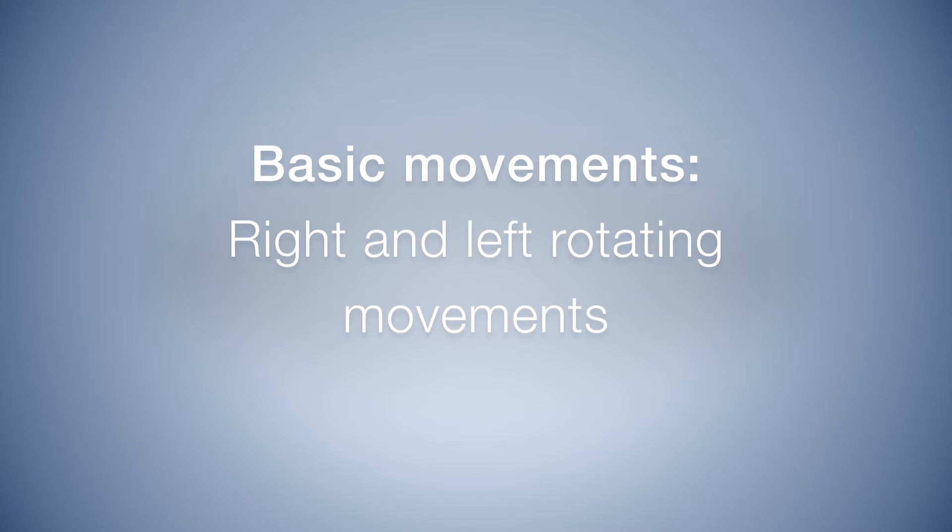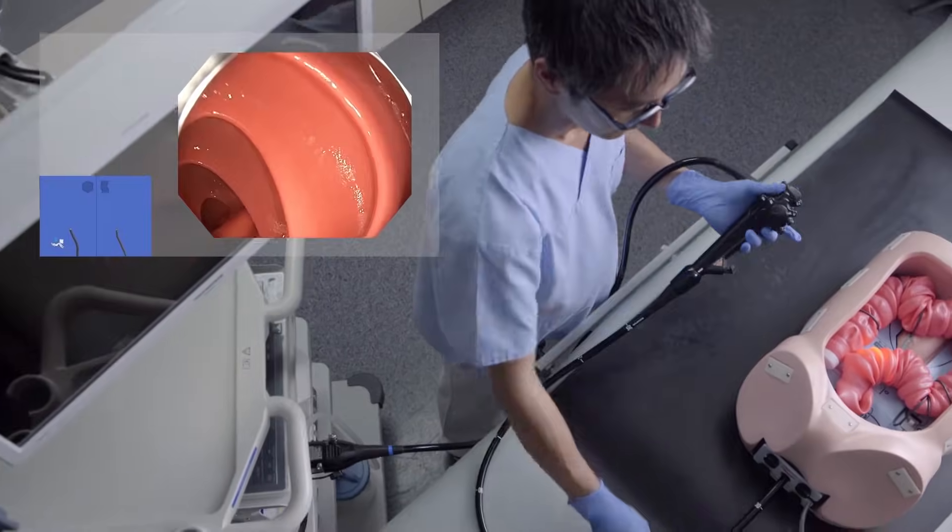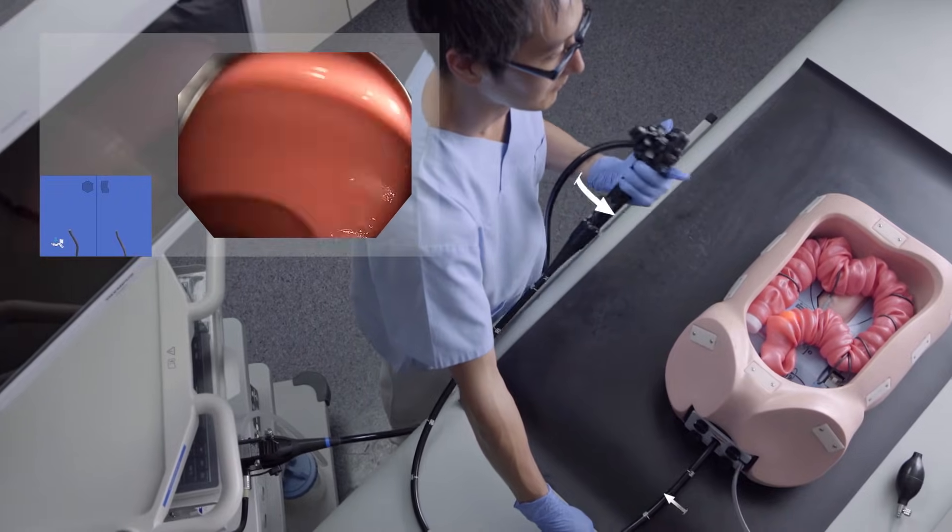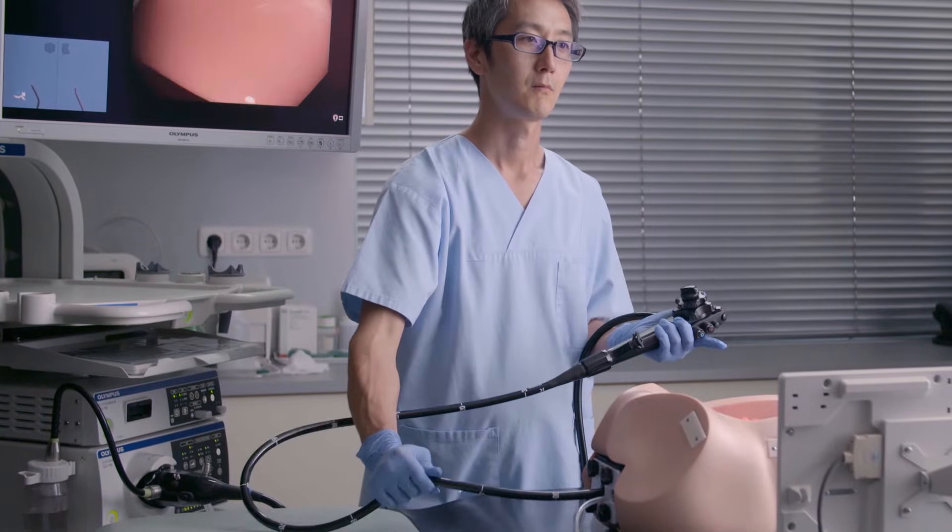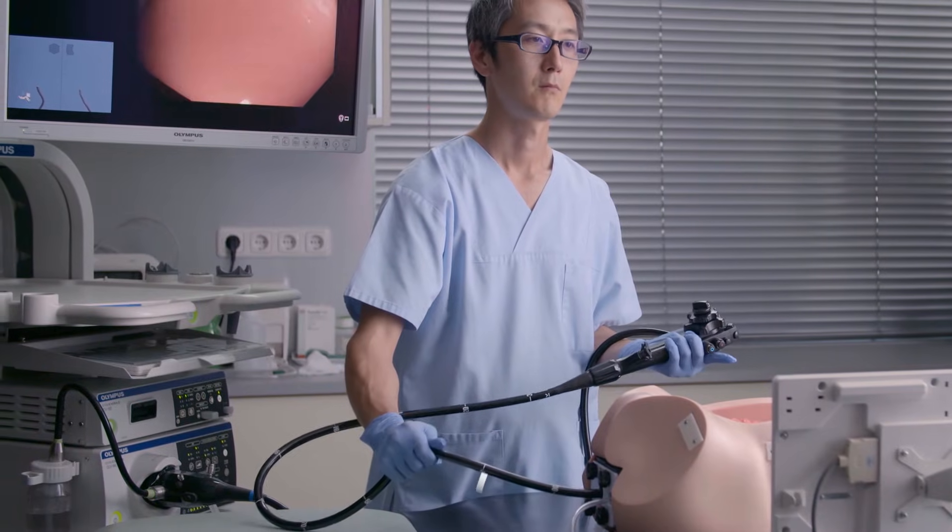Proper way to torque the colonoscope. Right and left rotation movements can be achieved either by twisting your wrist at the control body or by torquing the insertion tube with your right hand.